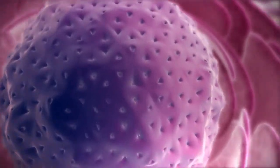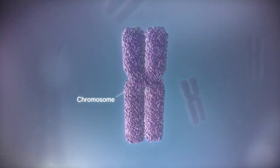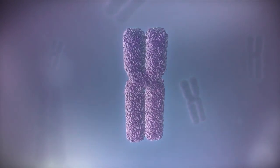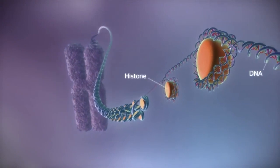In humans, the genome is split between 23 pairs of chromosomes. Each chromosome contains a long strand of DNA, tightly packaged around proteins called histones.